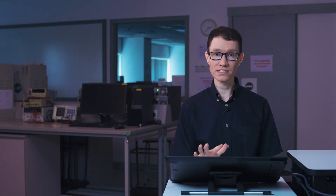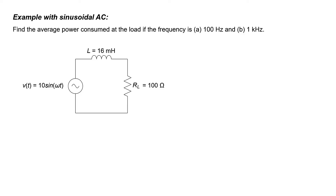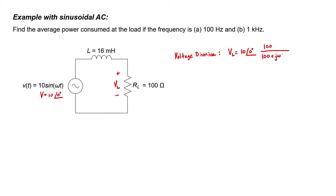In order to set the stage for circuits where the sources are not sinusoidal, let's first take a look at an example where the source is sinusoidal and otherwise simple, just to review some concepts. Here we're tasked with finding the average power consumed in a 100 ohm load resistor at two different frequencies. We can solve this problem using phasors and voltage division. My goal here is to find the RMS voltage across the load resistor, because once I know the RMS voltage, I can very easily find the average power.